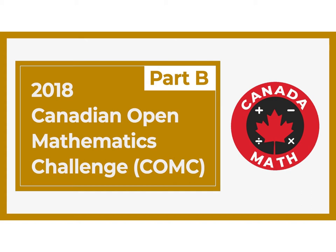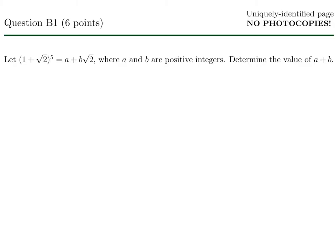2018 Canadian Open Mathematics Challenge Part B. Let 1 plus root 2 to the power of 5 equal A plus B times root 2, where A and B are positive integers. Determine the value of A plus B.